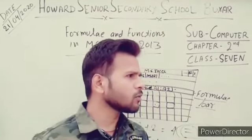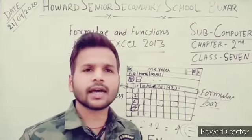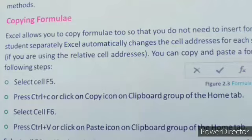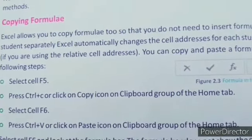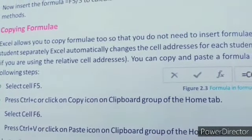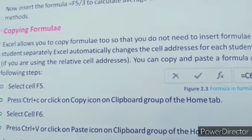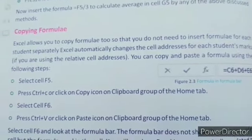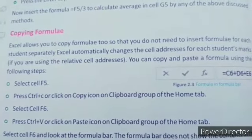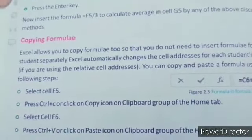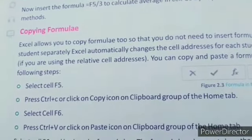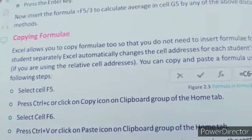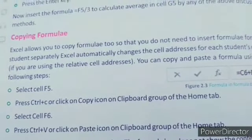Excel allows you to copy formulas so that you do not need to insert the formula for each student separately. Excel automatically changes the cell address for each student's marks if you are using the relative cell address. You can copy and paste a formula using the following steps. First, select cell F5, then press Ctrl+C or click on the copy icon on the clipboard group of the home tab.